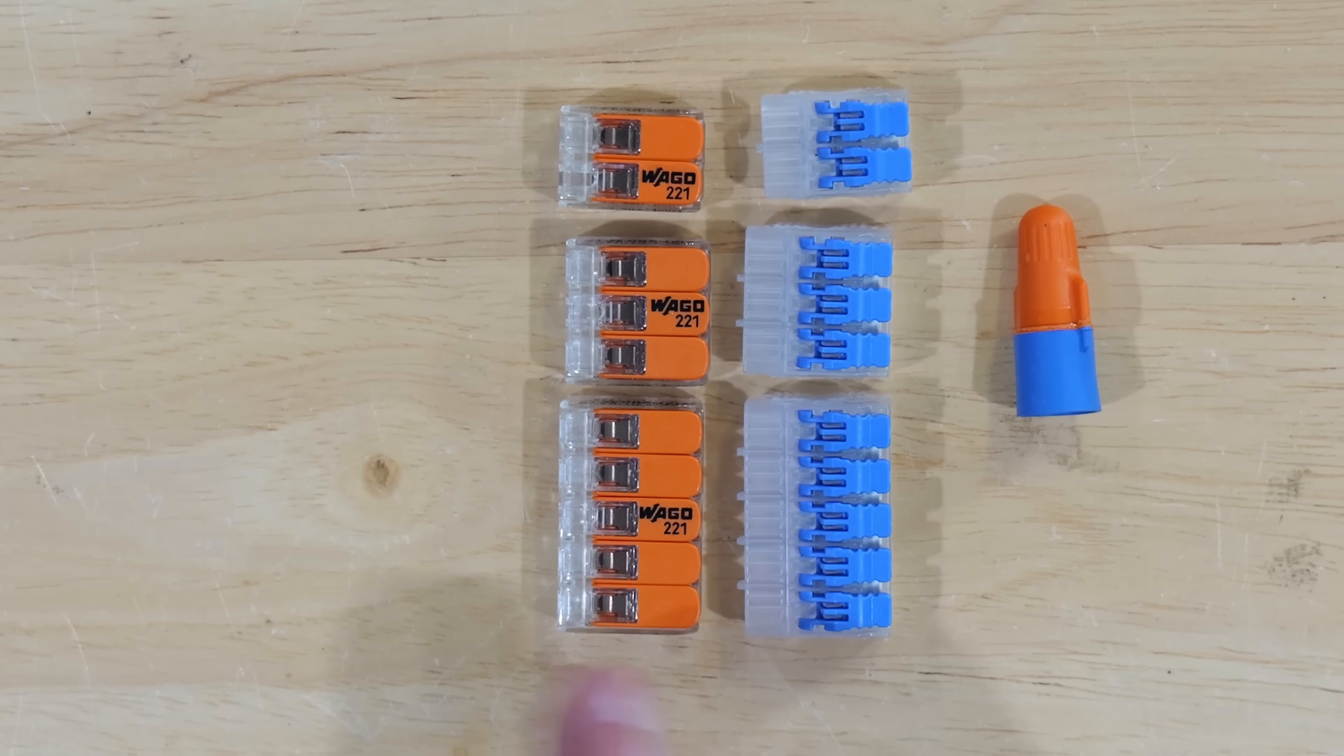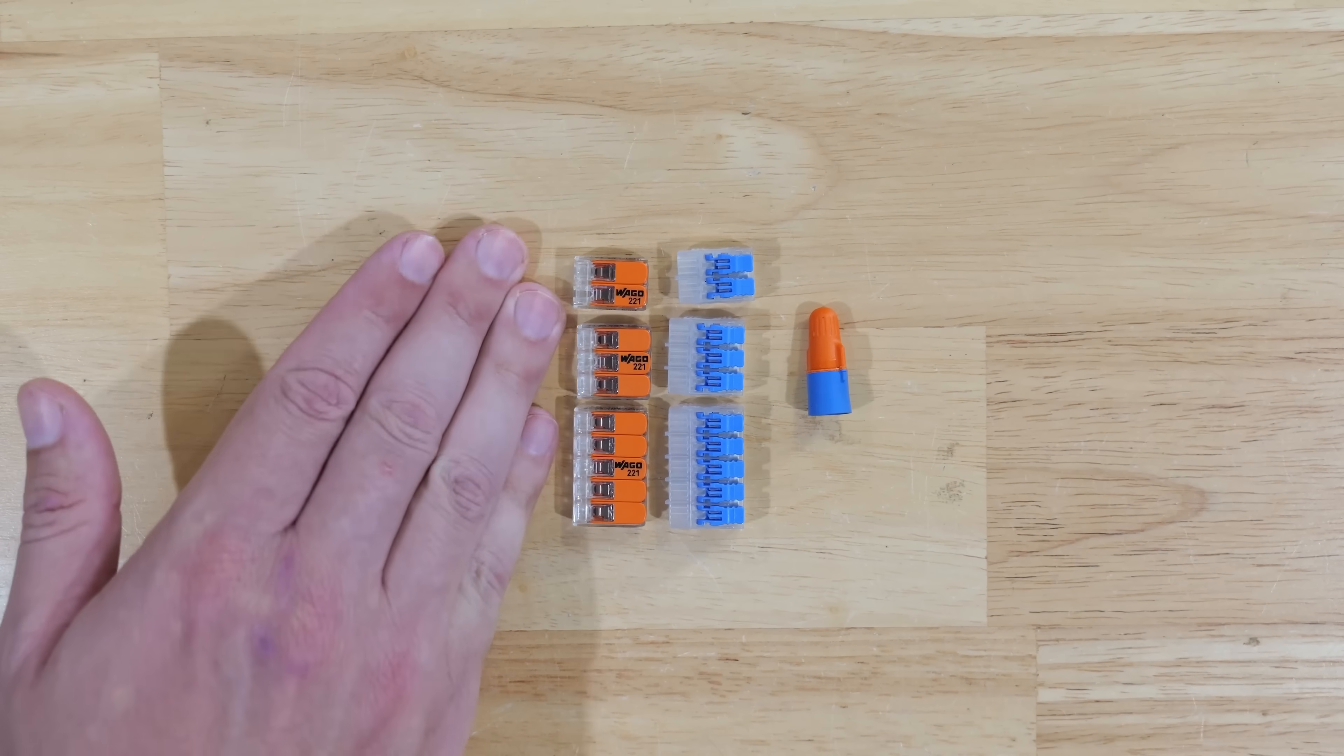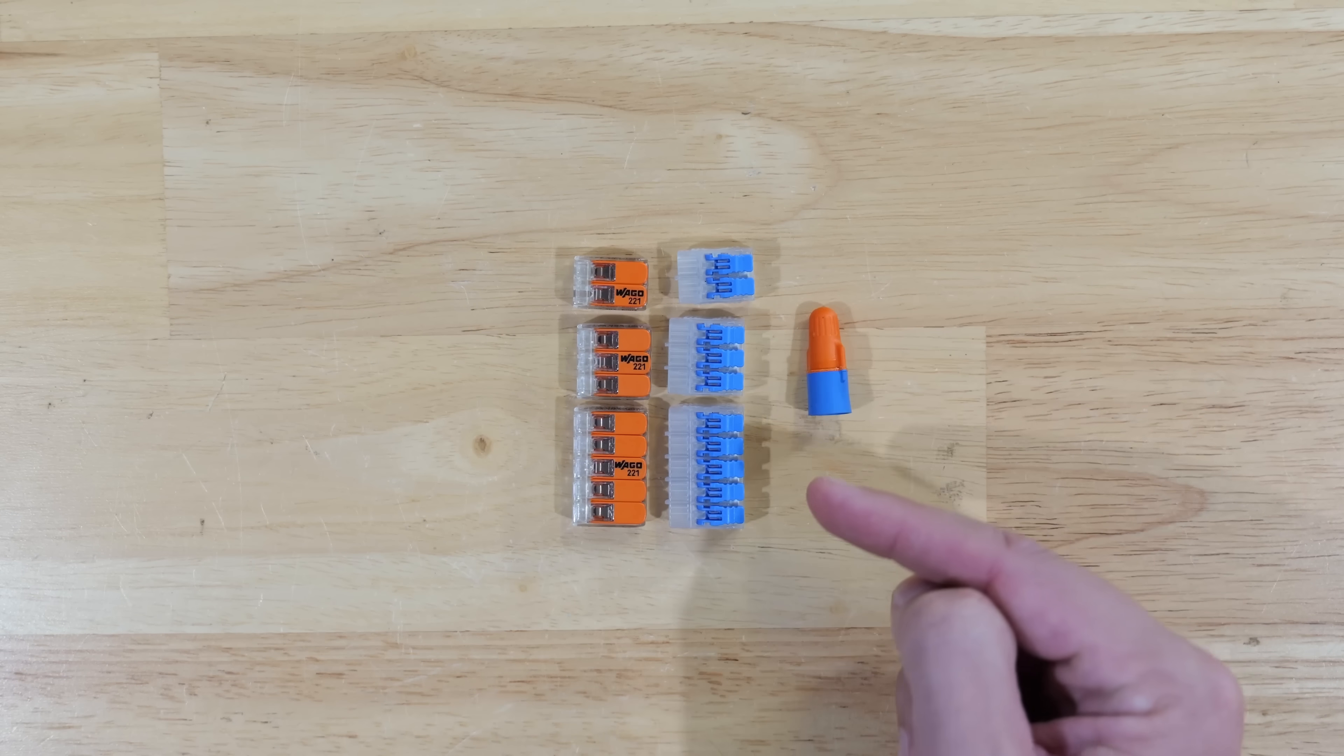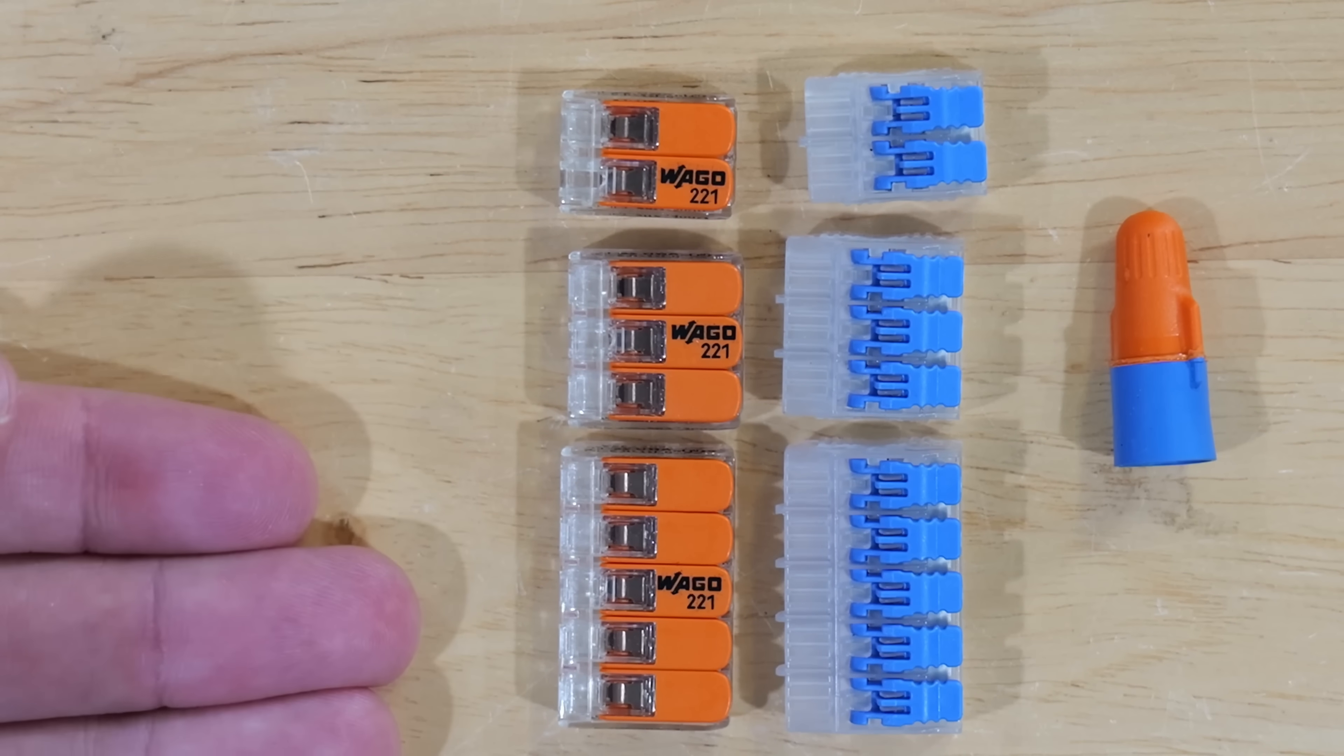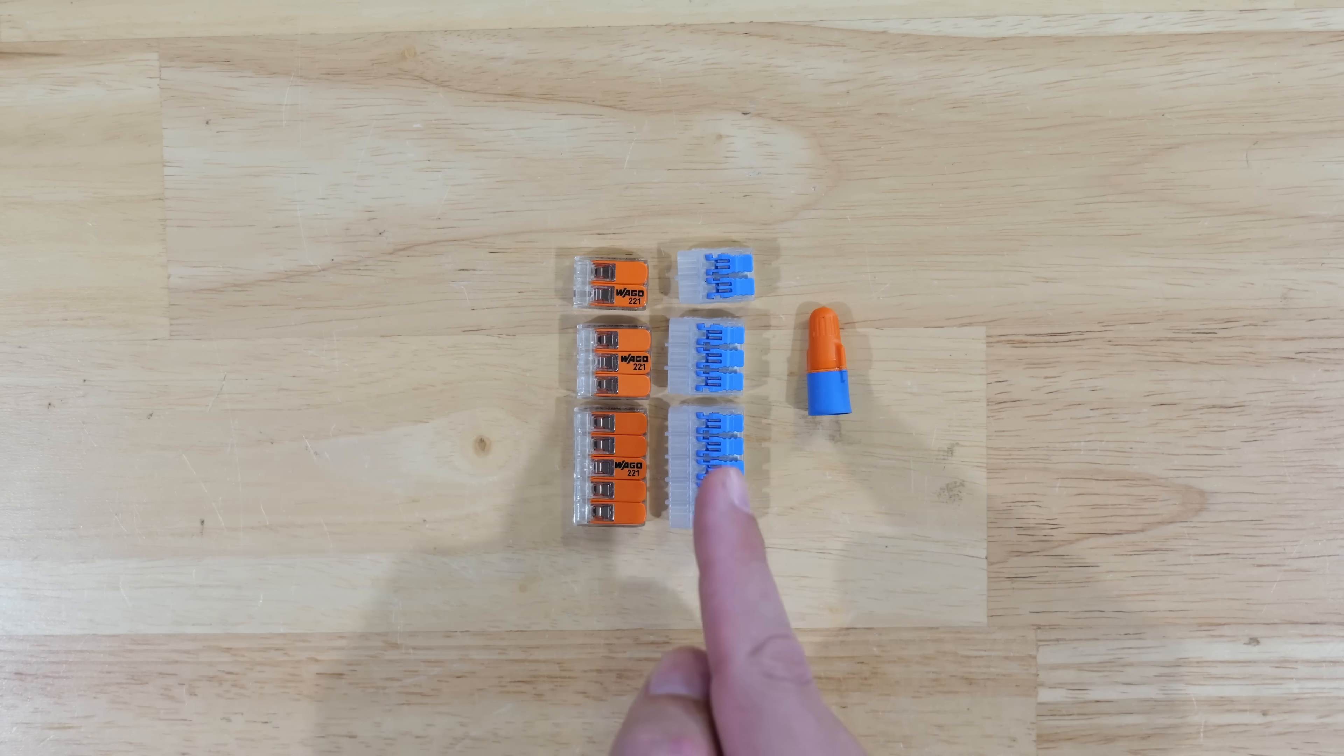When we look at between the WAGO 221 and the Ideal Ensure lever nuts, they're very close and comparable in price. But overall for the most part, the WAGOs are still usually going to edge out the Ideal Ensure lever nuts. Most of the time the WAGOs for a 10 count package of them is going to edge out the Ideals by around a dollar or so per bag depending on how many ports there are. Also there's typically more options with the WAGOs as far as quantity goes. Between the two lever nuts, the WAGOs beat out the Ideals as far as cost goes.